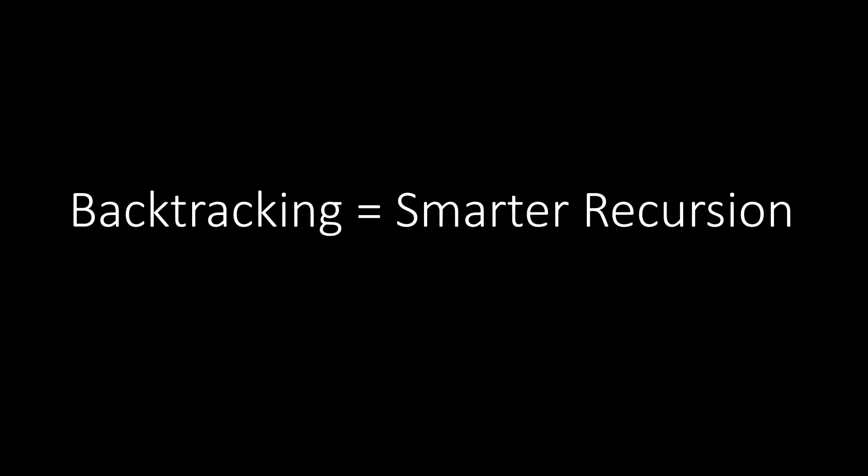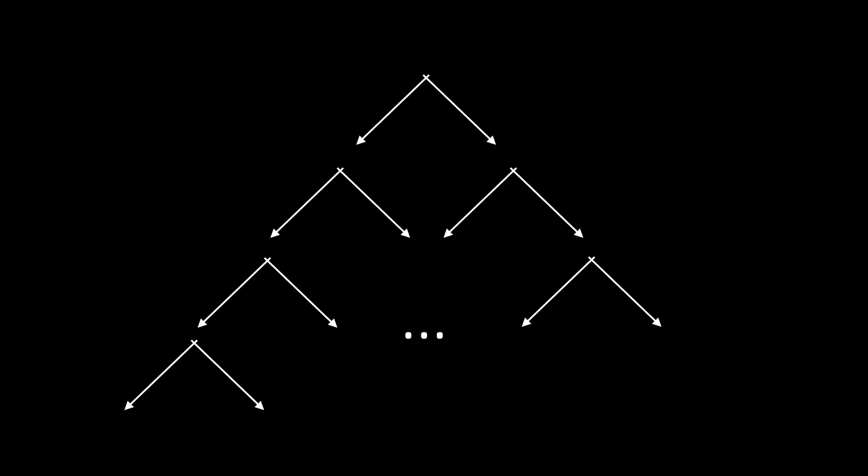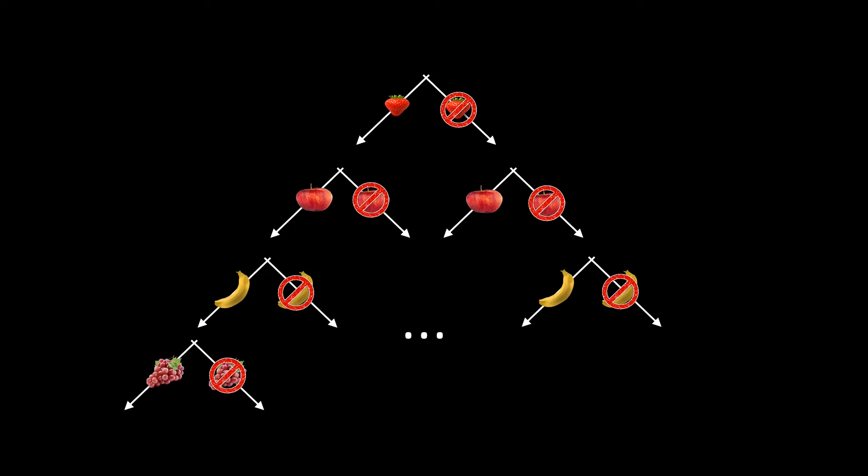Backtracking is essentially just a smarter recursion. We again try to systematically construct all possible subsets, however we are smarter in two ways. When looking at the recursion tree, we first include the items with the highest value density in our partial solution. The execution starts at the root, then we go down the leftmost path of the search tree. In other words, we first construct the greedy solution. This method of first constructing the most promising solution is called look-ahead. Look-ahead is the first trick of backtracking.